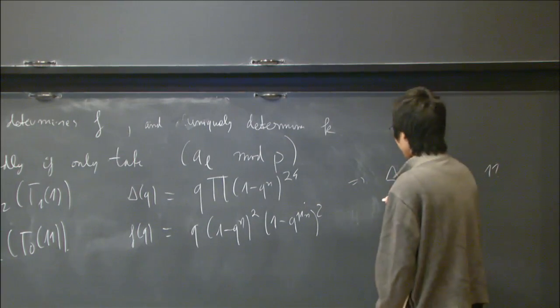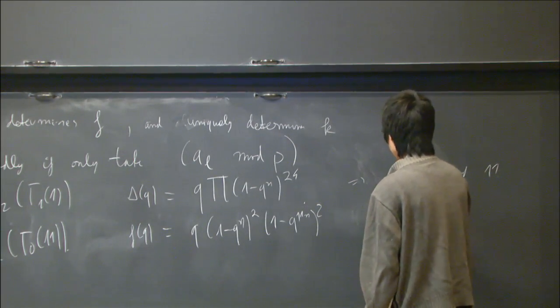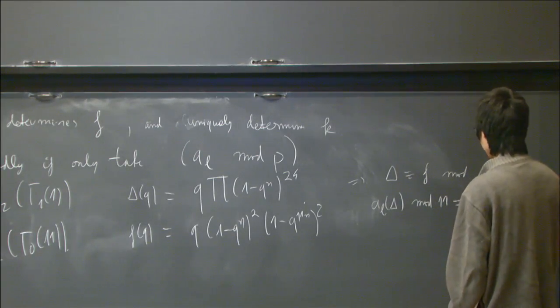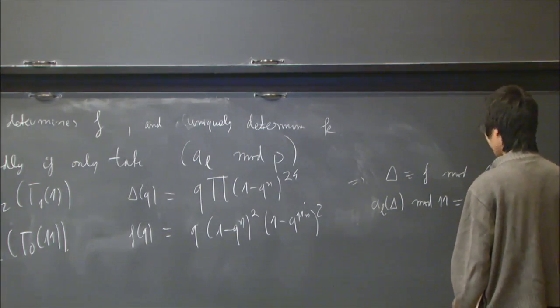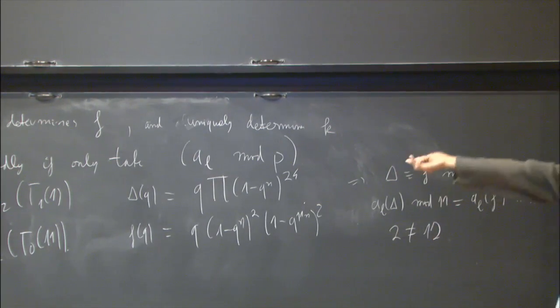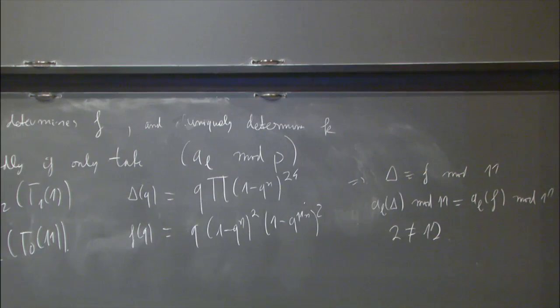In other words, the system of eigenvalues of delta and of this form f are the same mod 11. But of course, the weight 2 is different from weight 12. So, I can't erase this. Okay. And so this is the phenomena I want to describe.